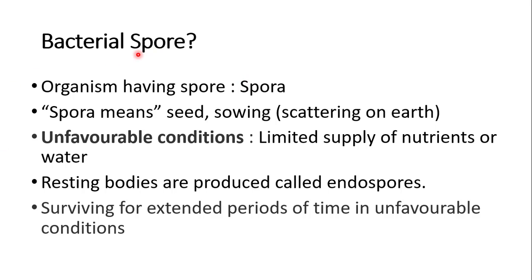To start with the first topic — what is a bacterial spore. The word 'spore' comes from 'spora,' meaning seed or sowing. Spores have the capacity to germinate and produce a vegetative cell through the process of sporulation. Each bacterial spore when it germinates forms a single vegetative cell, and this sporulation process is a method of preservation, not reproduction.